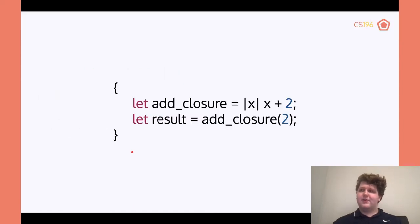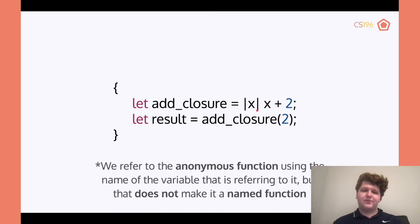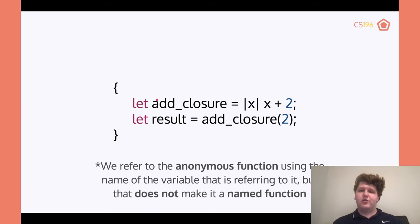Here's an example of a closure. We have `let add_closure = |x| x + 2`, just like we had before. What this closure will do is just add two to it. We can then say the result is equal to add_closure(2). By doing this, all we have to do is put all of this inside a variable and then we can call it like a normal function. We refer to it as an anonymous function because the name of the variable can be named anything and can be renamed — it's not a named function.